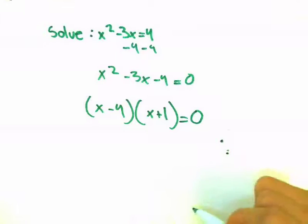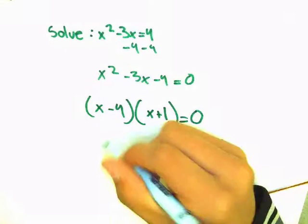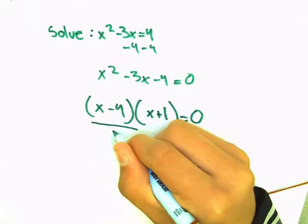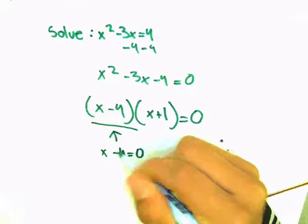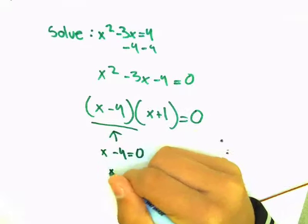Now we want to check for the value of x, so this number, x minus 4, has to be equal to 0. So that means x has to be 4.